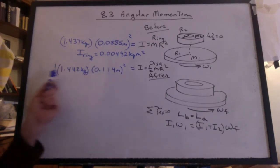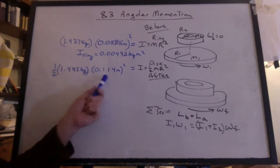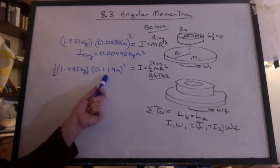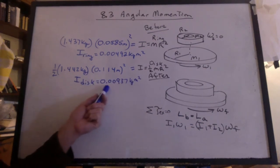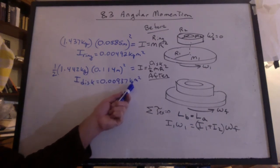I for the disk is going to be one half the mass times the radius squared. Again, I took the diameter and cut it in half. And so I have I for the disk of 0.00937 kilograms meters squared.